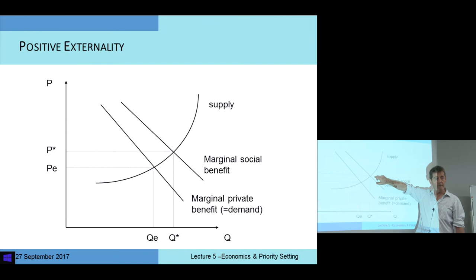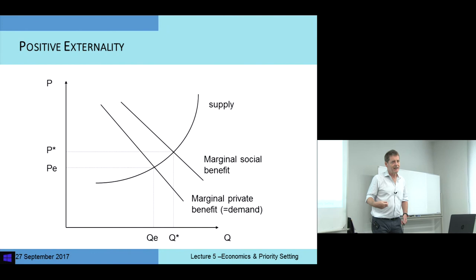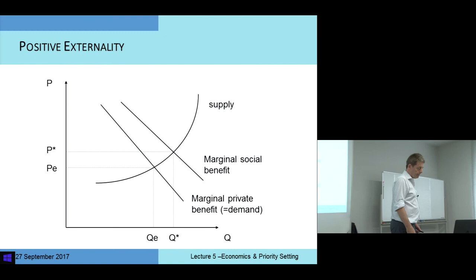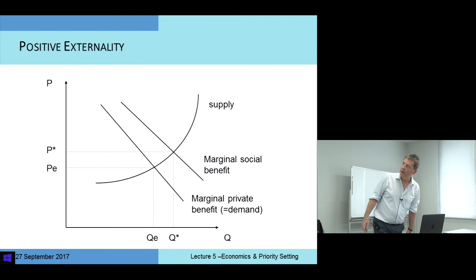That's an example of a positive externality. The relevance is that if we leave it to the market to determine, we expect to end up at QE or somewhere like QE, not at Q-star.